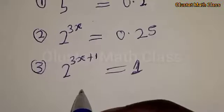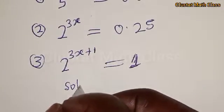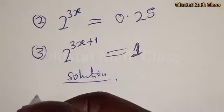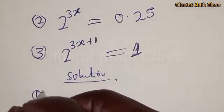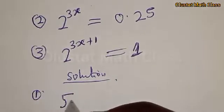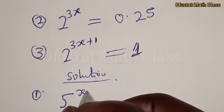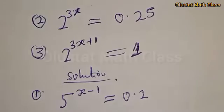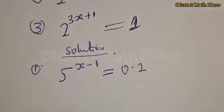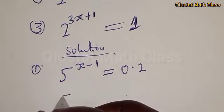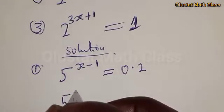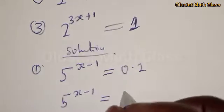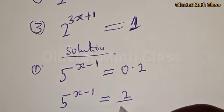Solution. We start with question number 1. We have 5 raised to power x minus 1 is equal to 0.2. This can be expressed as 5 raised to power x minus 1 is equal to 2 over 10.